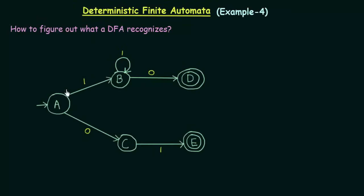So here we have a DFA. We have this figure and we have to find out what this DFA recognizes. Just by looking at this, what can we see? We see that we have a starting state here which is A, and then A on getting input 1 it goes this way, and A on getting input 0 it goes this way. So let's find out what kind of strings it accepts.